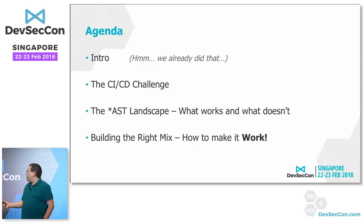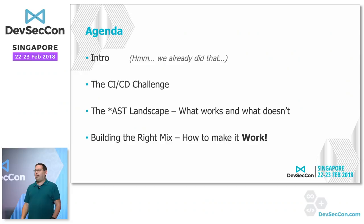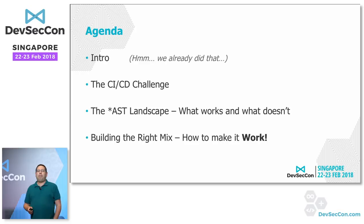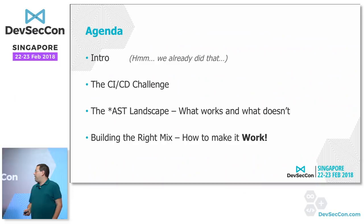So what are we going to do today? We'll talk about the CI/CD challenge, then the AST landscape — the different technologies for application security testing, their strengths and weaknesses, and how they fit or don't fit CI/CD. After we understand all those details, we're going to build the right mix to make it all work for CI/CD. There's more than one way, so what I'm going to tell you is my suggestion, but it should give you some direction.